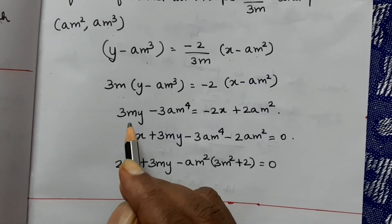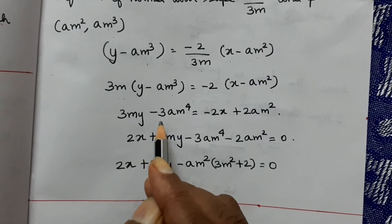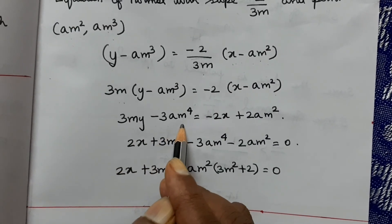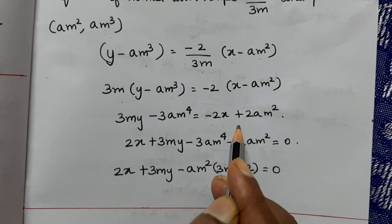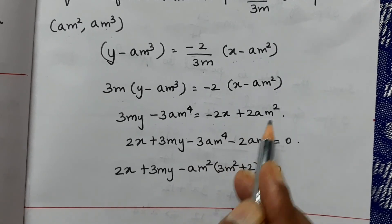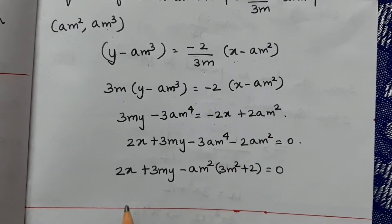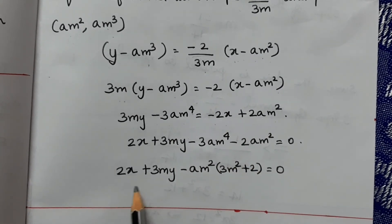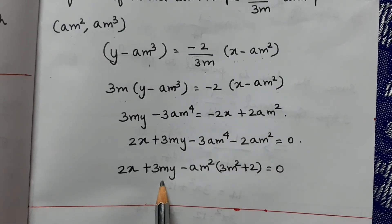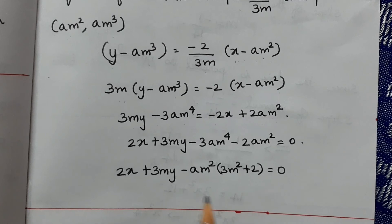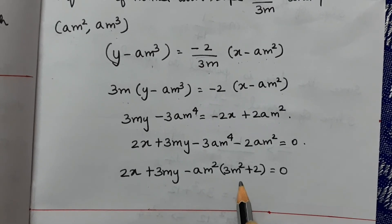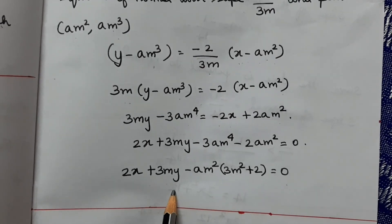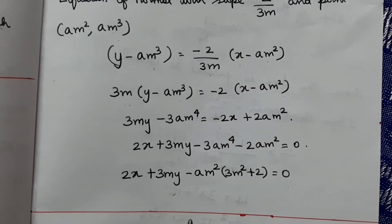Rearranging: 2x + 3my - am²(3m² + 2) = 0. This is the equation of the normal to the curve ay² = x³ at the point (am², am³). Thank you.